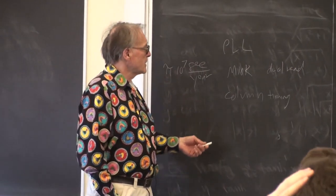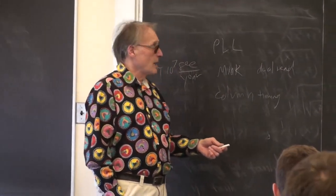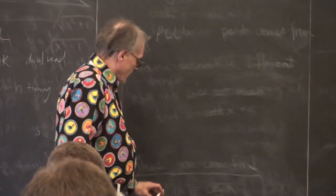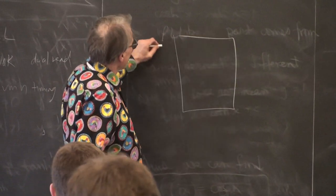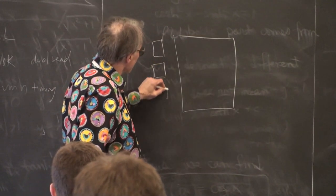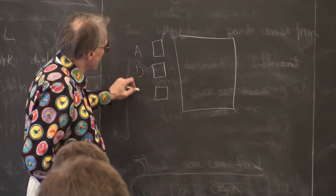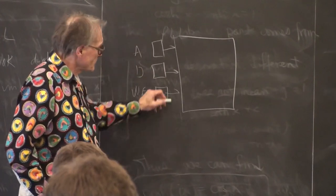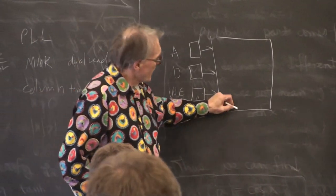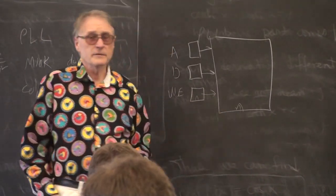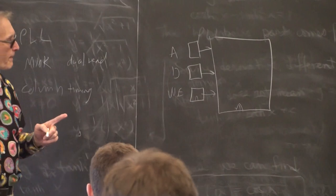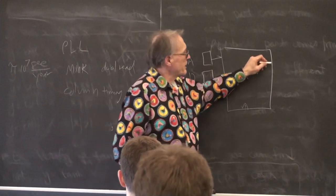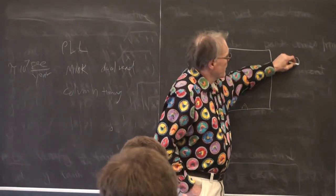Also had a question on M10K blocks. M10K blocks have a pipeline register on the front end for address, data, and write enable. It's a one-stage pipeline. These are all clocked. The main block of memory is clocked. That suggests that from the time you assert an address until the time you get data out, if you're reading, is two cycles.